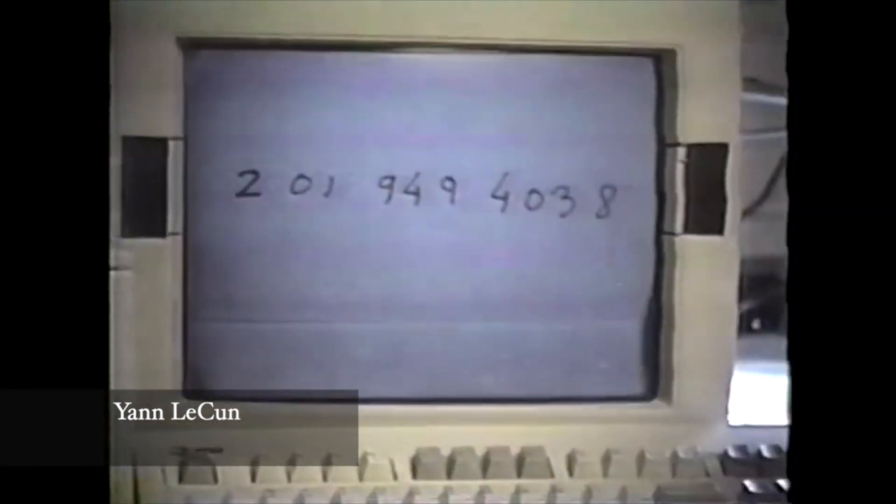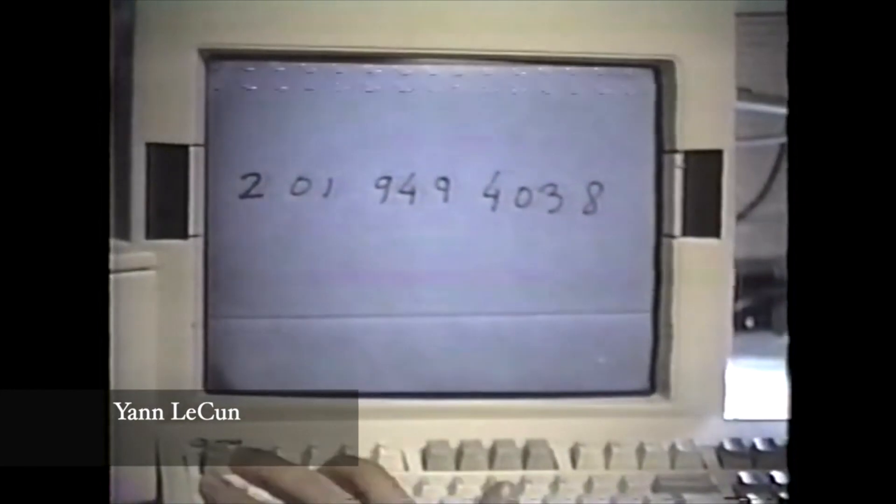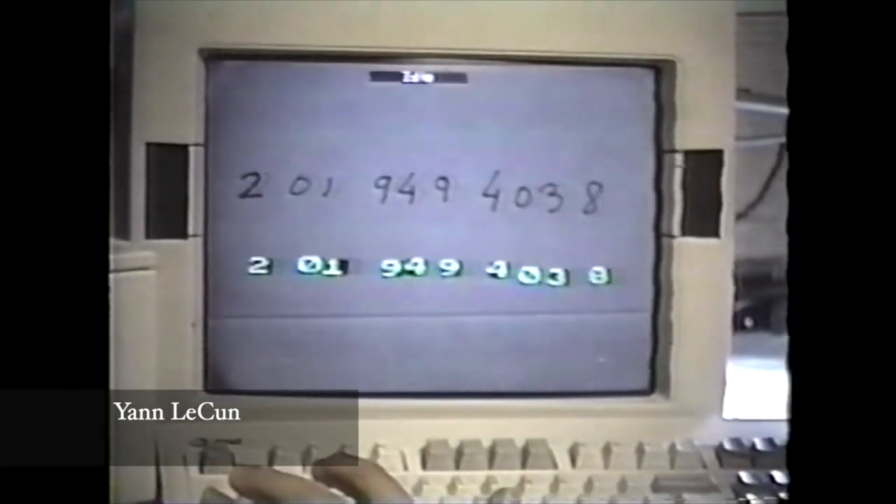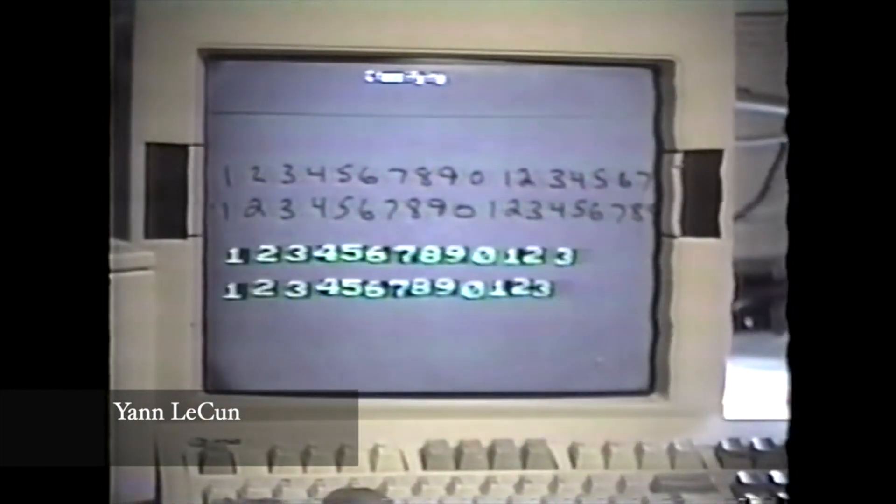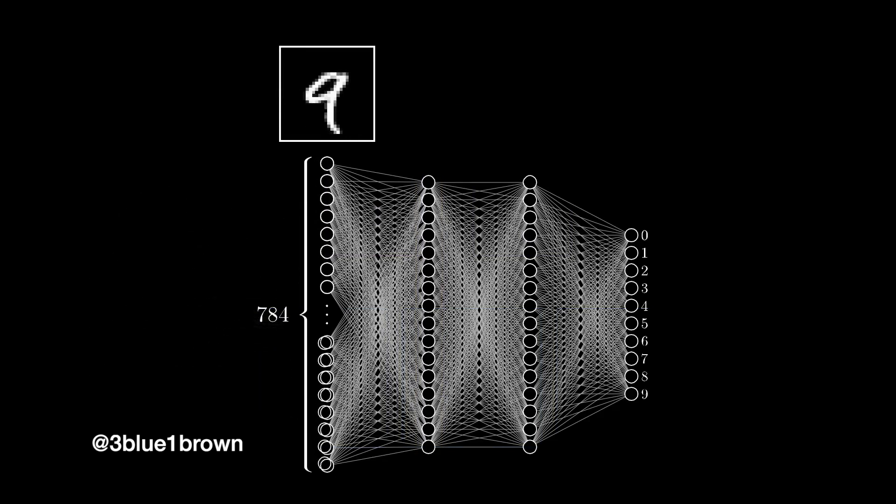It required a watershed moment which came in the late 80s when Yan LeCun worked on artificial neural networks that could learn to recognize human handwritten digits. It was able to do this because it learned features or patterns related to digits, such as curves or line count.